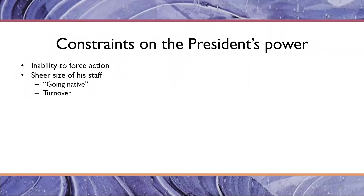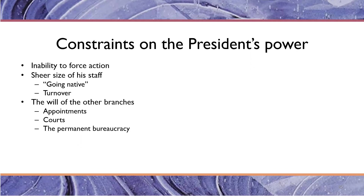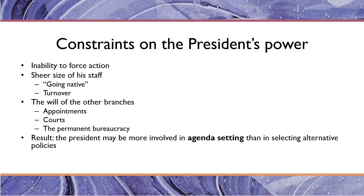A lot of presidential appointments have to go through the advice and consent process in the Senate. Judges also have to go through the Senate. The courts also serve as a check on presidential power — if the president goes too far and does something unconstitutional or illegal, the courts will have something to say about it. And the permanent bureaucracy, that is the civil service, also serves as a constraint on the president's power. So the president may be more involved in agenda setting than in selecting alternative policies — the solutions to problems are likely to be shaped in negotiations between the legislative and executive branch.